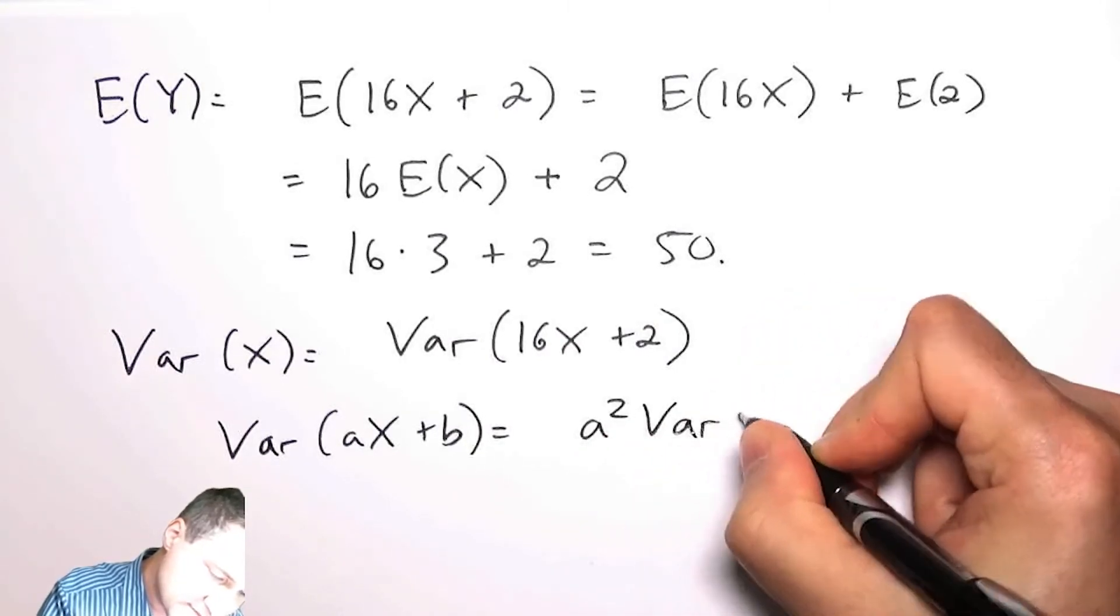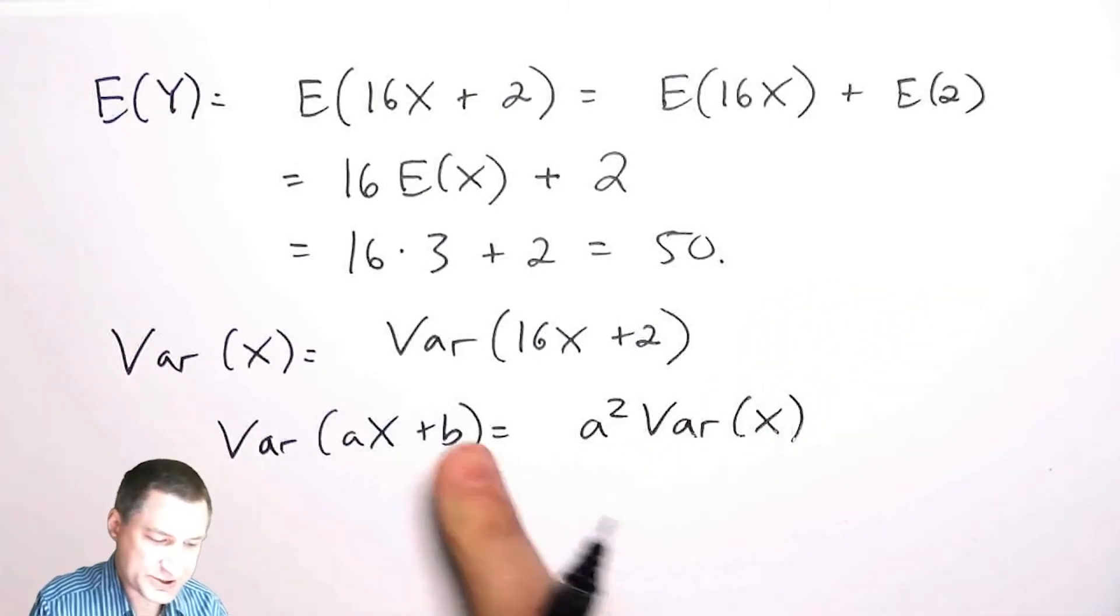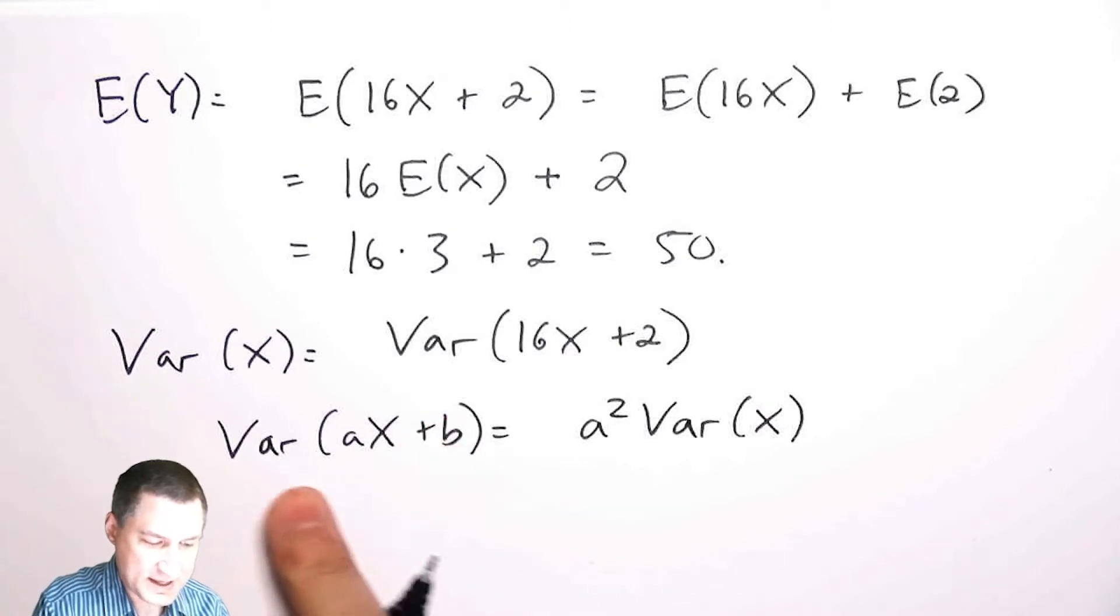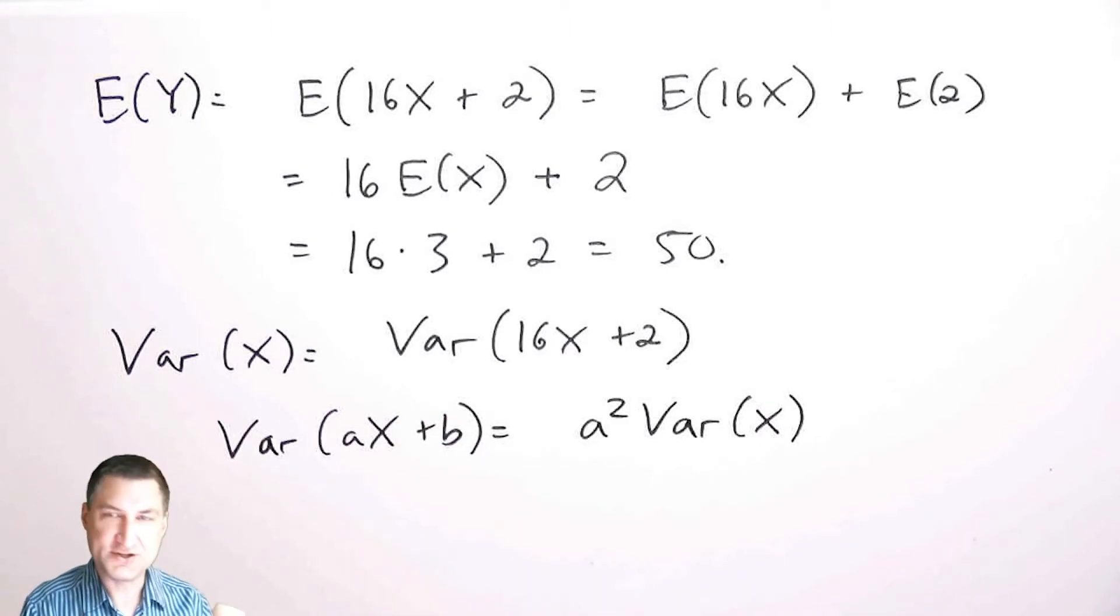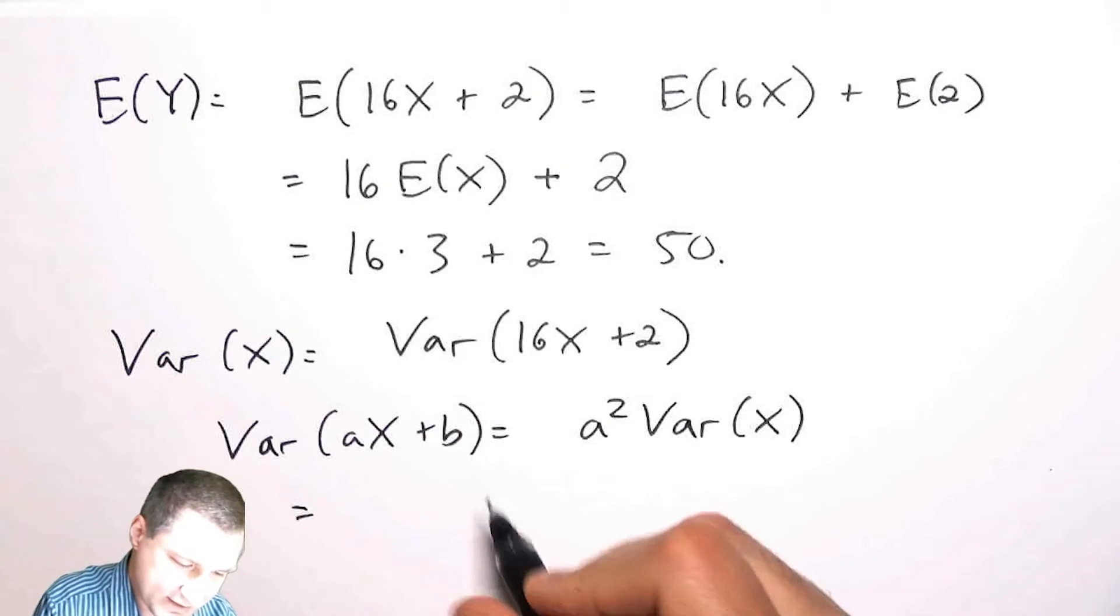I definitely showed this in a previous lecture, and the variance of something plus a constant doesn't change the variance because it's just like shifting the PDF back and forth along the real axis, so the spread of the random variable doesn't change.